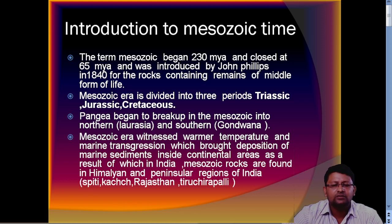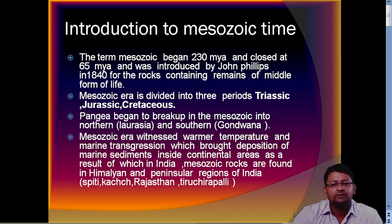The rocks of the Mesozoic era are very well exposed in the Indian subcontinent — like in Himachal Pradesh, Kashmir, some parts of the Jurassic of Kutch, and also some peninsular parts. Today we will talk about the Triassic of Spiti Valley. The Mesozoic era is divided into three periods: Triassic, Jurassic, and Cretaceous.